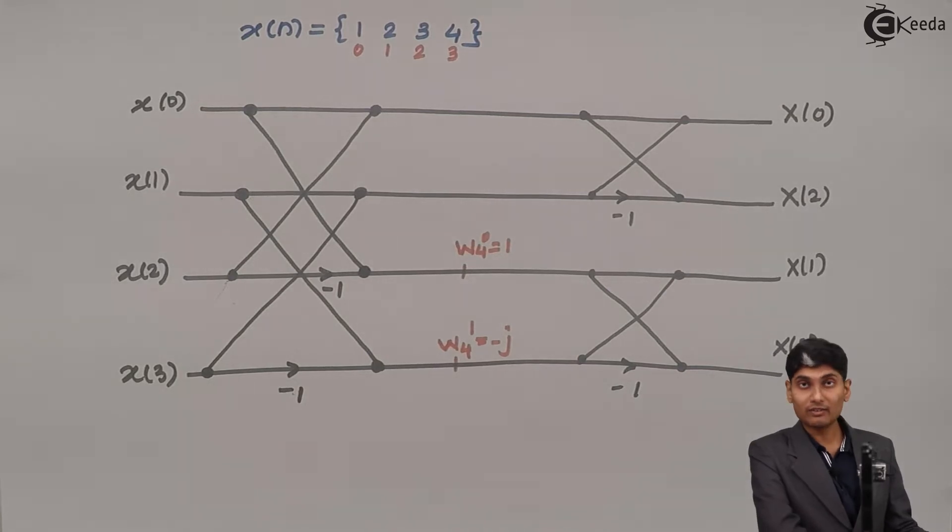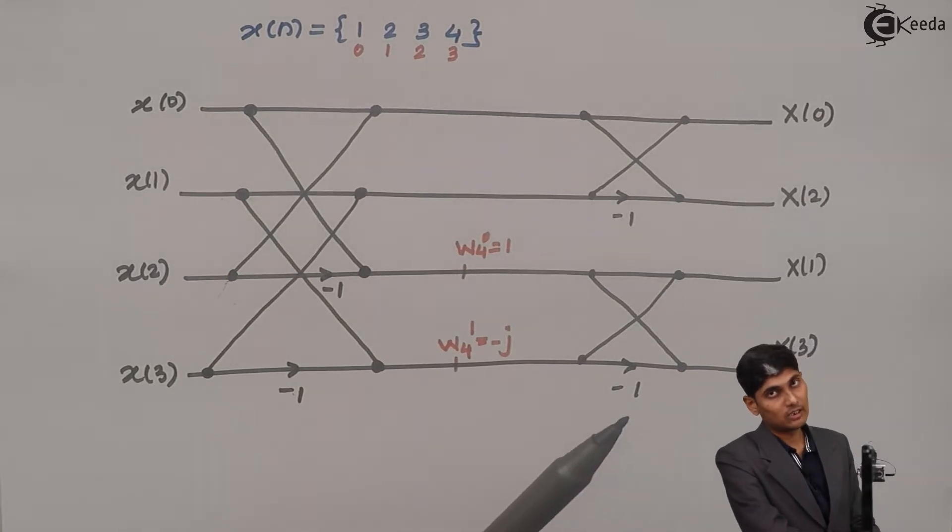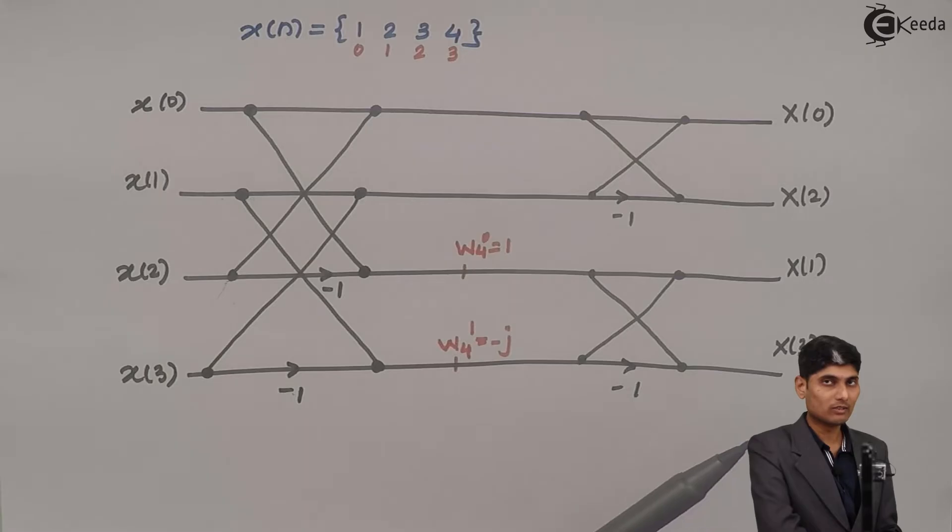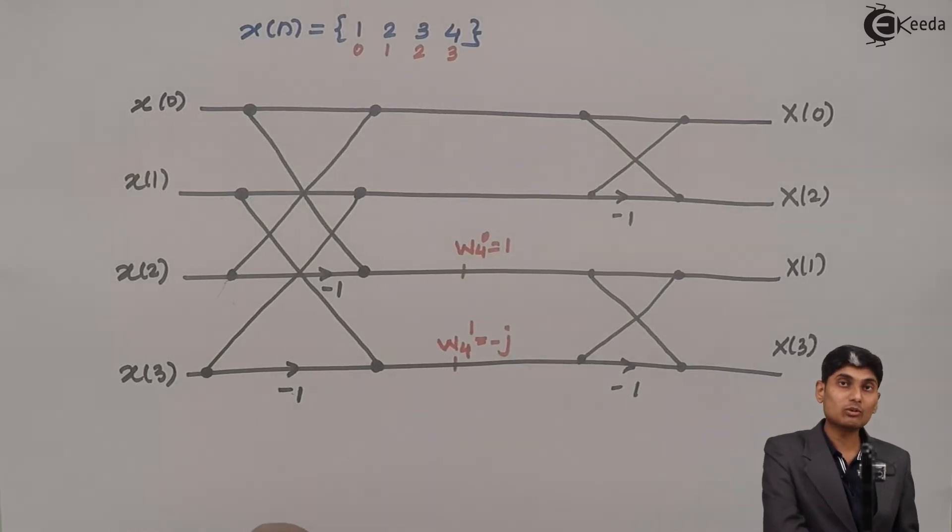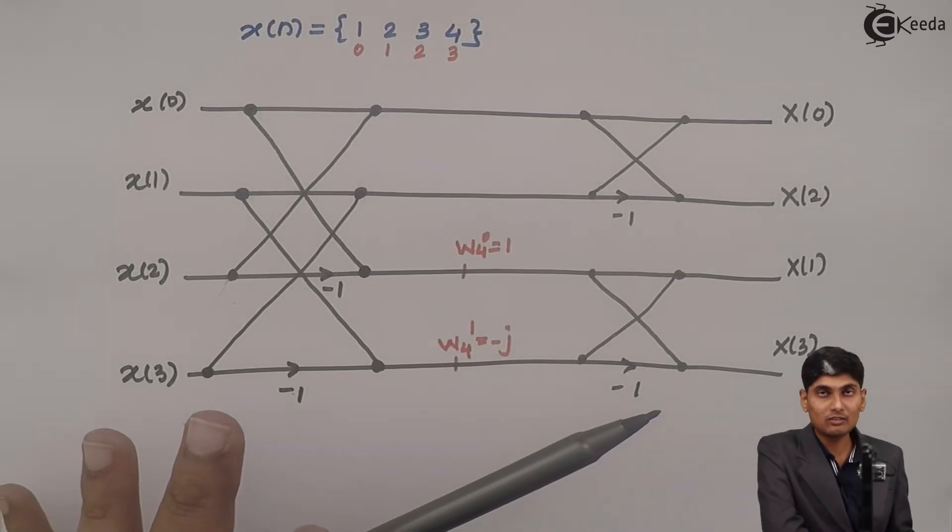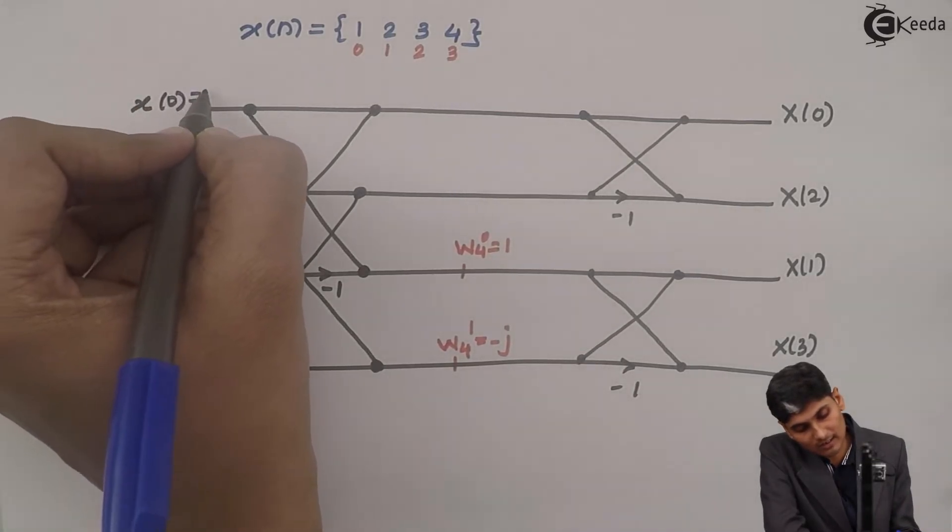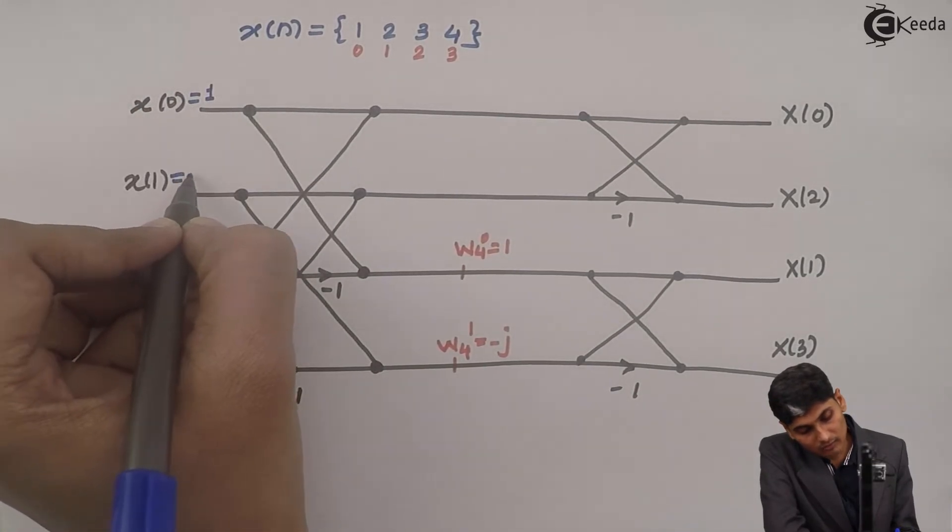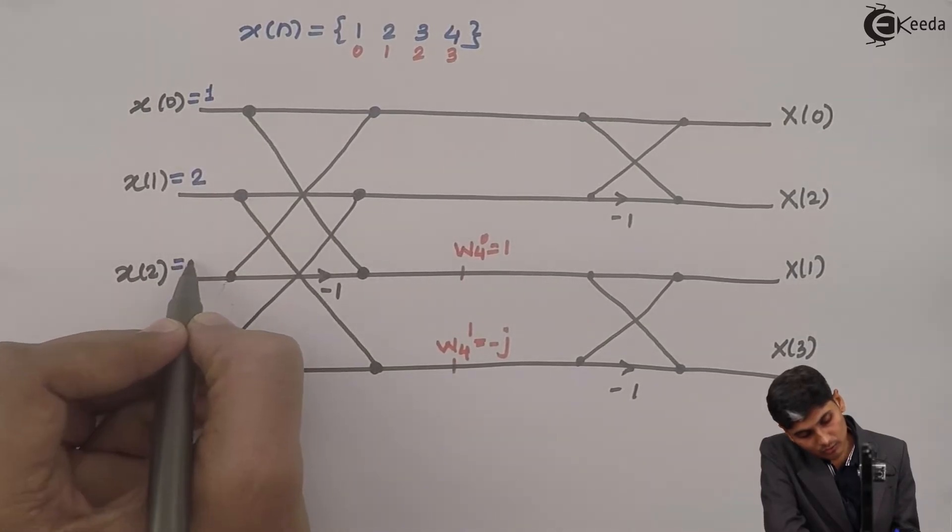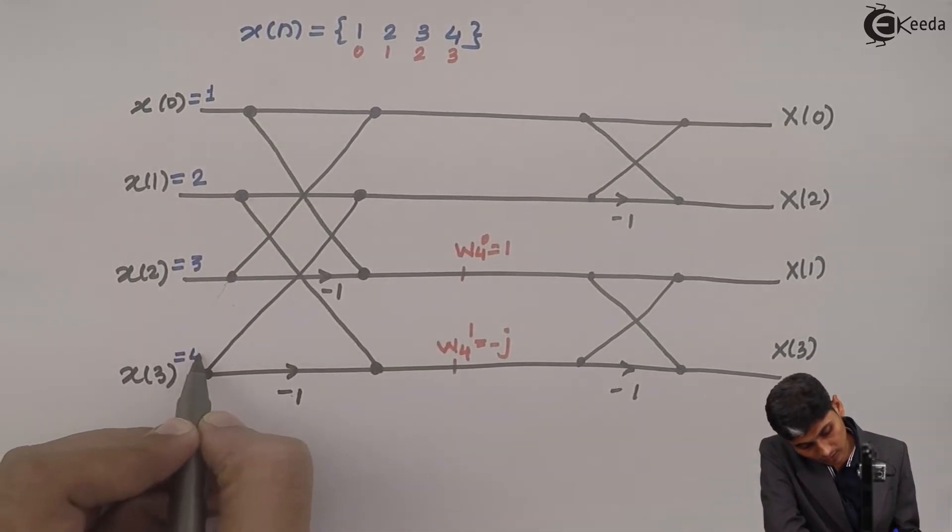Now in DIF FFT, we do not break the x of n sequence into even and odd parts. We have to write the x of n in order. So x of 0 in this case is 1, x of 1 is 2, x of 2 is 3, and x of 3 is 4.